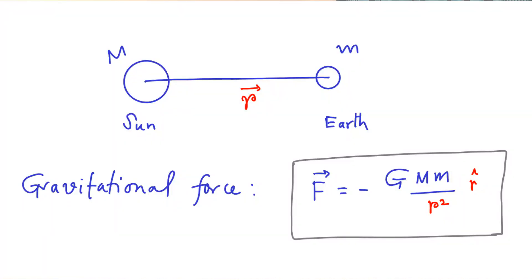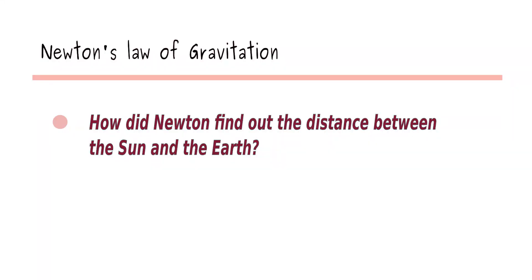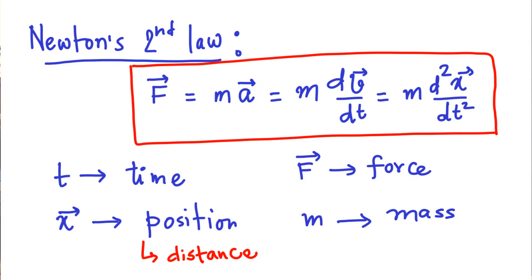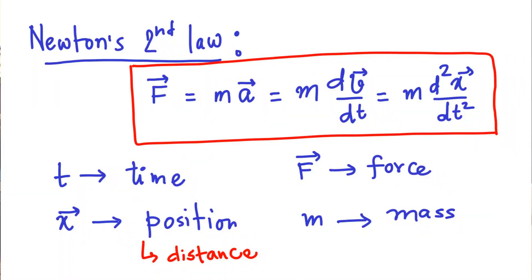Newton's law of gravitation says that the gravitational force between the Sun and the Earth varies inversely proportional to the distance squared between them. But have you ever thought, how did Newton find out the distance between the Sun and the Earth? In the last session we discussed the mathematical objects that appear in Newton's law — in particular, the concept of time. In today's session, we are going to discuss the concept of distance.